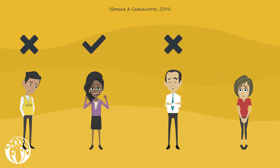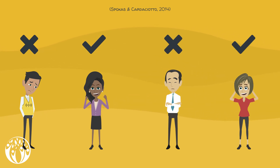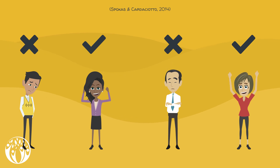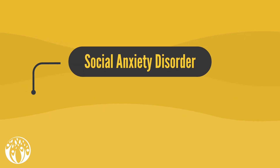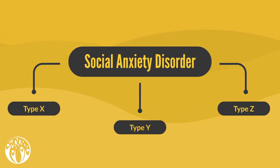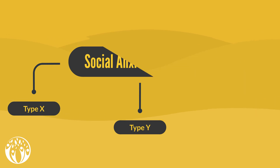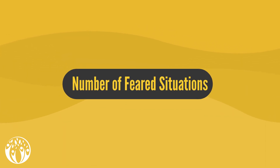Not keeping these specific differences in mind is one of the reasons why therapy seems to work for only a certain proportion of socially anxious people, and why some individuals can only make little improvements despite great efforts. For this reason, it is crucial to recognize those differences and to divide socially anxious people into various subgroups.